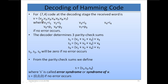V1, V2, V3, V4 are the information bits, and V5, V6, and V7 are parity bits. V1 is equal to I1, V2 is equal to I2, V3 is equal to I3, and V4 is equal to I4 — these are information bits. V5 is equal to P1, V6 is equal to P2, and V7 is equal to P3 — these are the three parity bits added in the codeword.